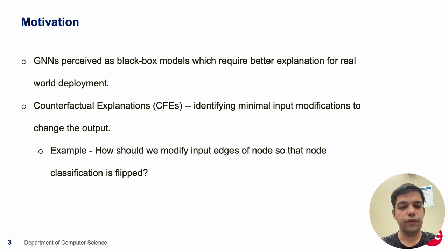For example, how should we modify the input edges of a node so that the classification output is flipped?